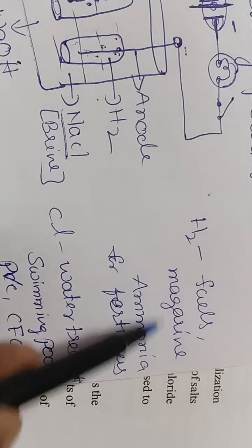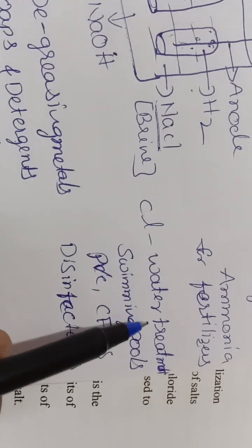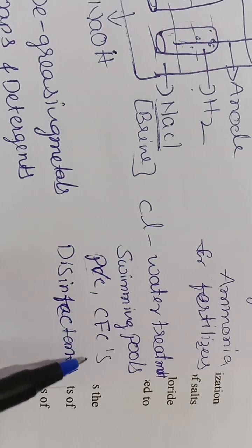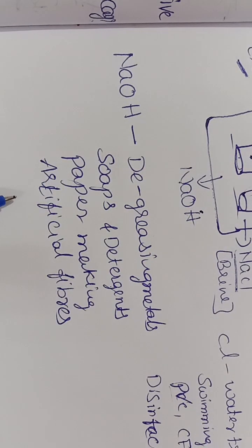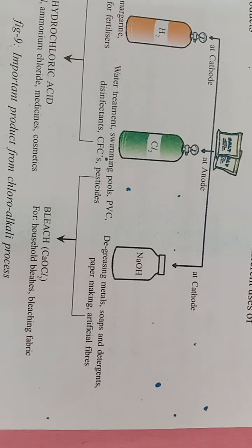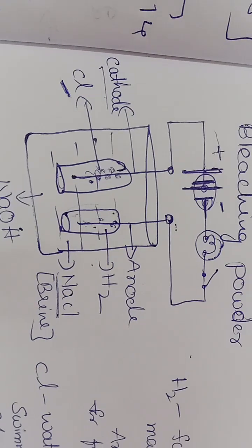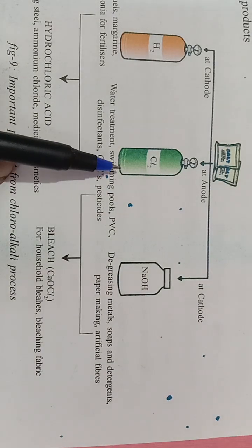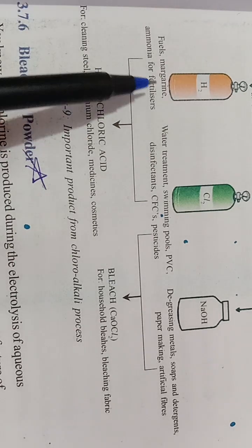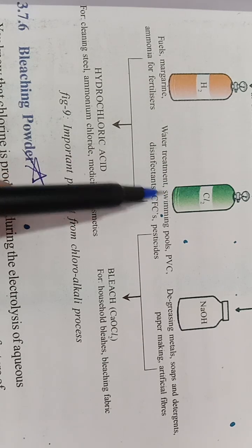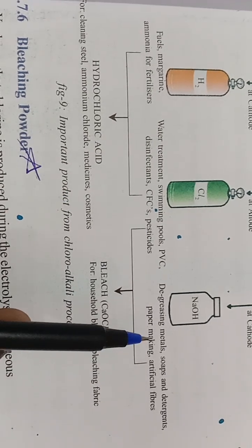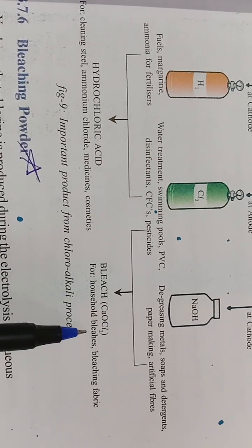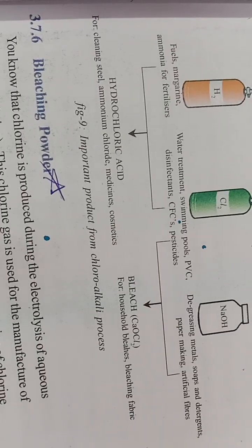The remaining solution left in the beaker is sodium hydroxide. This electrolysis process gives us: hydrogen gas used for fuels, margarine, and ammonia for fertilizers; chlorine used for water treatment, swimming pools, PVC, CFCs, and disinfectants; and sodium hydroxide used for degreasing metals, soaps and detergents, paper making, and artificial fibers. When you mix hydrogen and chlorine you get hydrochloric acid, used for cleaning steel, ammonium chloride, medicines, and cosmetics. Adding chlorine gas to sodium hydroxide gives bleach, used for household bleaching and bleaching fabric.